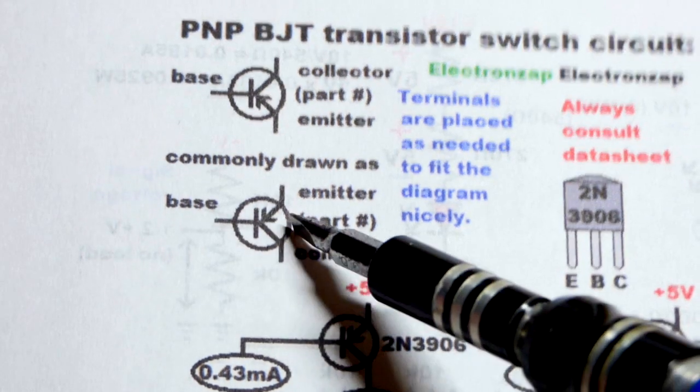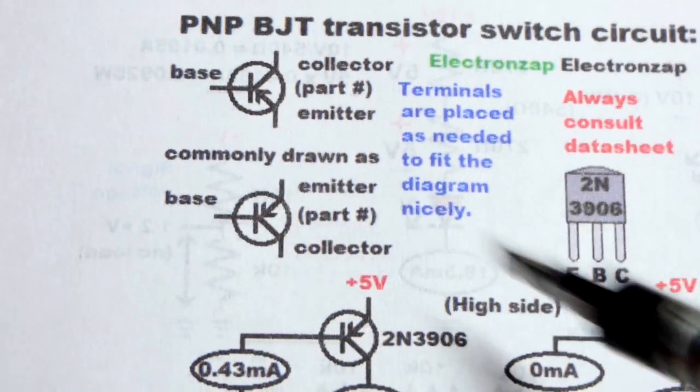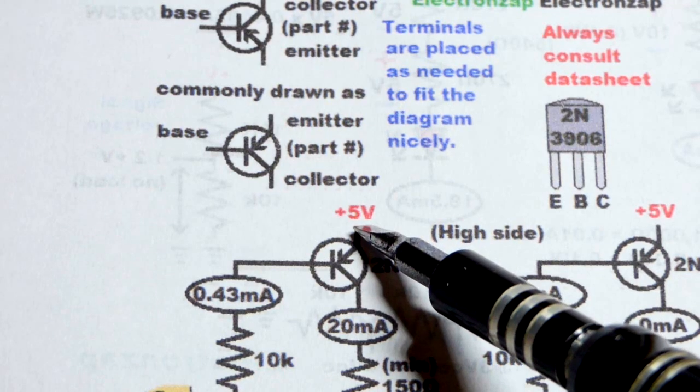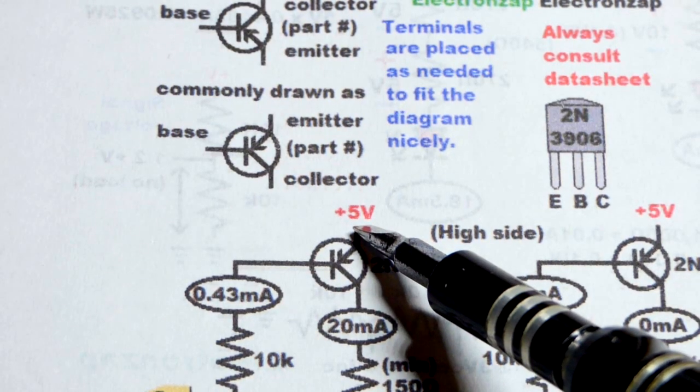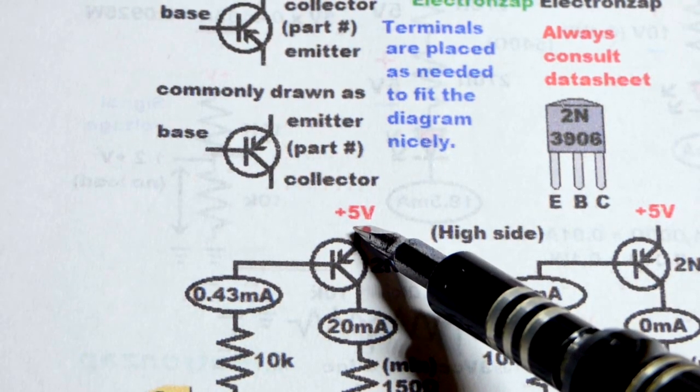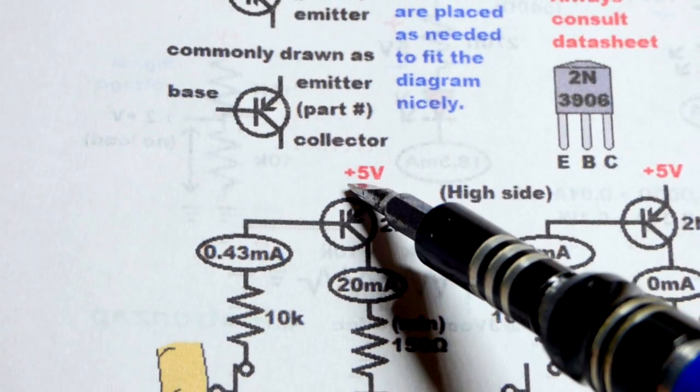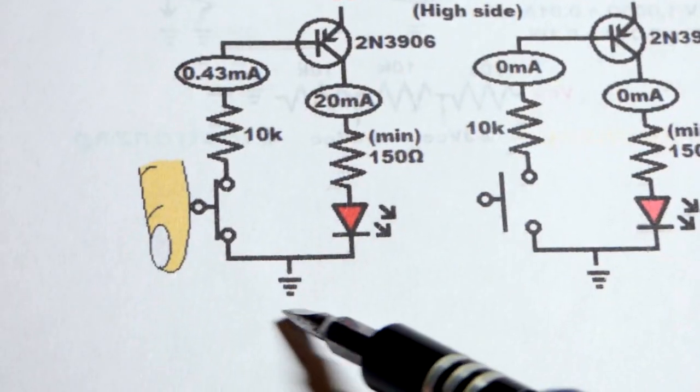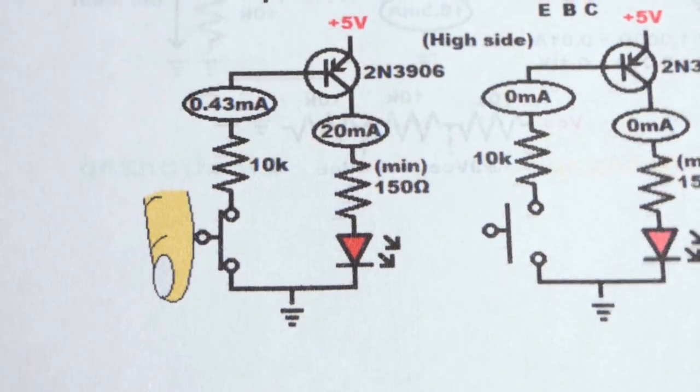You are more likely to see the emitter on top like that, because when it's in a circuit for a schematic diagram, the emitter goes towards the more positive side of the power supply, which is usually drawn above the more negative side of the power supply ground right there.